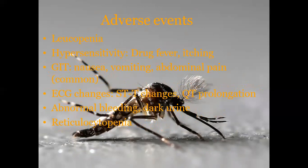Adverse effects of artemisinin and its derivatives include leukopenia and hypersensitivity reactions such as drug fever and itching. Gastrointestinal troubles like nausea, vomiting, and abdominal pain are common side effects. ECG changes such as ST-T changes and QT prolongation can occur, along with abnormal bleeding and reticulocytopenia.